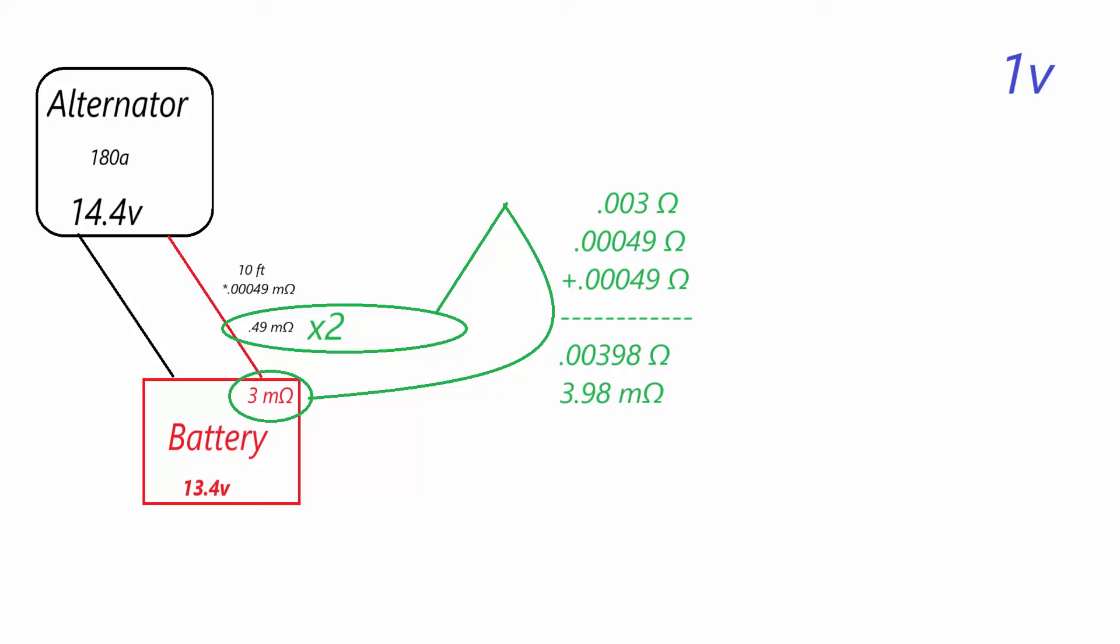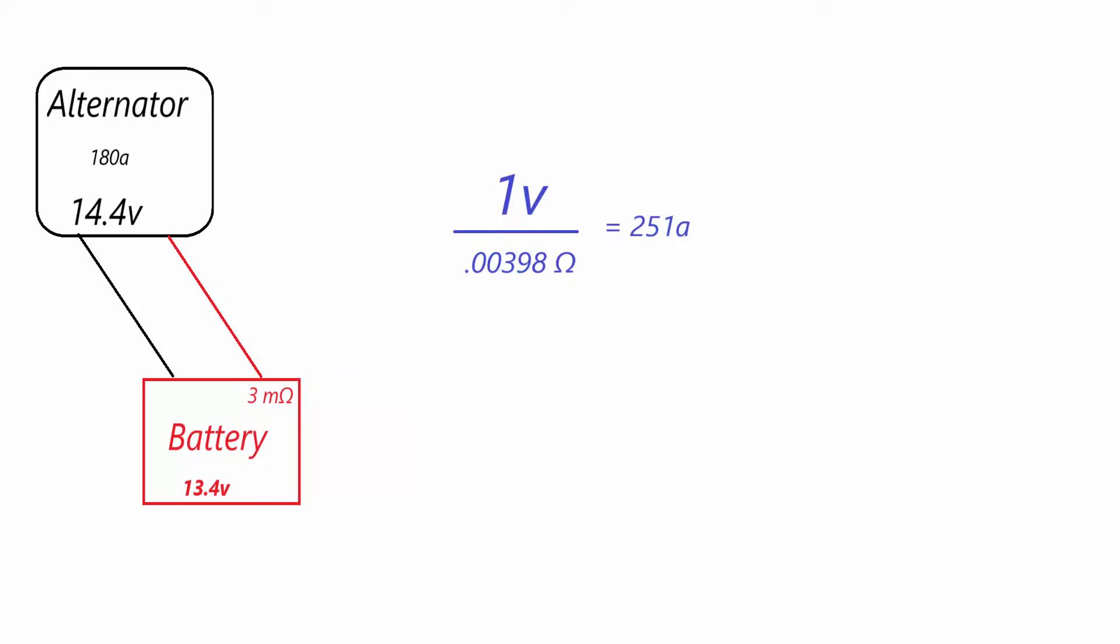Next, we have to remember that we're measuring the resistance in the full circuit. So we also need to add this 0.49 milliohms for the ground wire returning to the alternator. Now that we know the resistance of our wiring, we can add it to the resistance of our battery, which in this case is 3 milliohms. So we're adding 0.49 milliohms twice to 3 milliohms and it gives us a total of 3.98 milliohms.